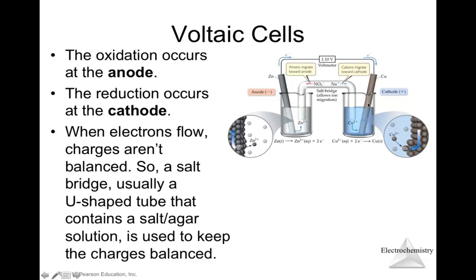Electrons then go to the copper side, where Cu²⁺ ions trap those electrons. You will see more copper building up on the copper strip, as the copper²⁺ receives electrons from the anode and becomes copper solid. Meanwhile, zinc solid releases electrons, producing Zn²⁺ in solution, increasing the positive charge. On the cathode side, when a positive charge is removed, that solution will increase in negative charge, so positive ions from the salt bridge must counteract that negative charge.